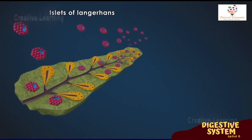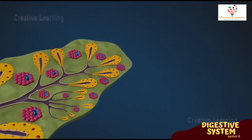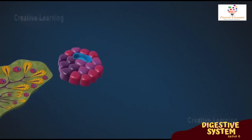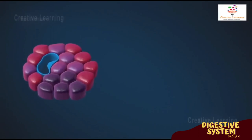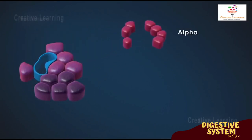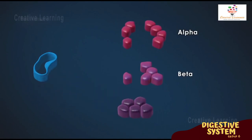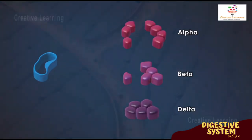The endocrine pancreas contains islets of Langerhans, responsible for producing and secreting hormones directly into the bloodstream. Three of the four cell types in the islets secrete vital hormones: alpha cells secrete glucagon, which increases blood sugar levels when they get too low; beta cells secrete insulin, which lowers blood sugar levels when they get too high; and delta cells secrete somatostatin, which inhibits the release of numerous hormones in the body.